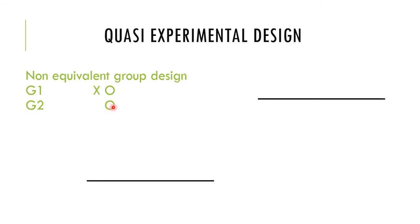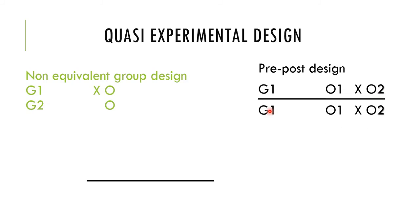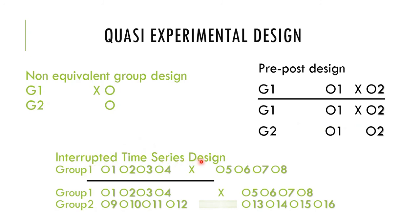In quasi-experimental design: Non-equivalent group design — no random sampling; groups receive treatment or no treatment and are observed. Pre-post design with non-equivalent control group — Group 1 is observed, treatment applied, then observed again; Group 2 has no treatment but is also observed. Interrupted time series design — a set of measurements is taken at multiple time points; treatment is applied after several observations, then more observations follow, compared to a control group with no treatment across the same time points.